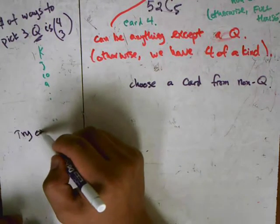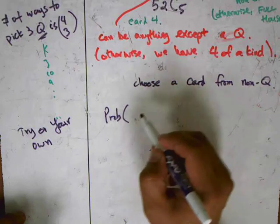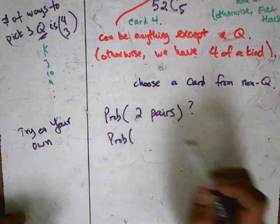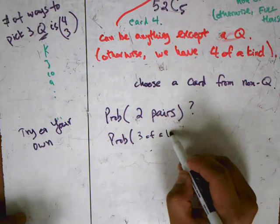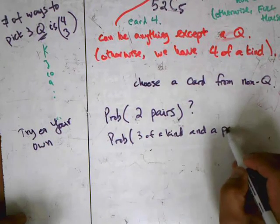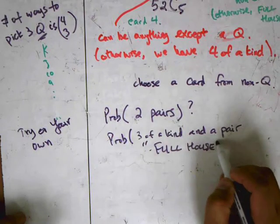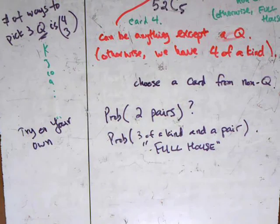Here's a try-on-your-own challenge: what's the probability of getting two pairs, and what's the probability of getting a full house — that's three of a kind and a pair? Work on these problems and ask your teacher if you need help. Thanks for watching, and make sure to continue to the next video on binomial probability.